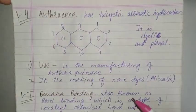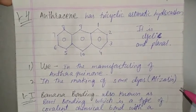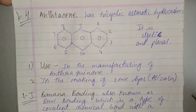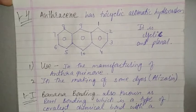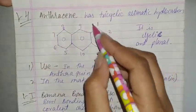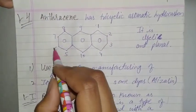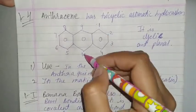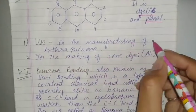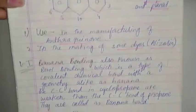Next question: tell about anthracene, what is the structure and its uses. Anthracene structure - the numbering we have to remember: 1, 2, 3, 4, then numbering starts with 5, 6, 7, 8, then the middle 9 and 10. It is cyclic and planar structure. It is used in the manufacturing of anthraquinone and in the making of some dyes known as alizarin.